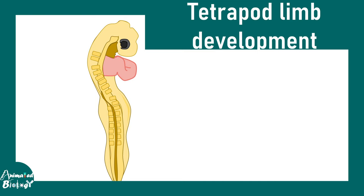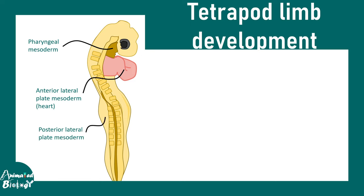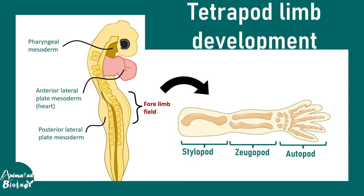So we have to understand the embryonic landmarks a little bit. There is the pharyngeal mesoderm, the anterior lateral plate mesoderm, and the posterior lateral plate mesoderm. Just opposite to the posterior plate mesoderm there is a field — a zone of tissue which is defined as the forelimb field. It is not a limb yet, but it is destined to become a limb in the future.